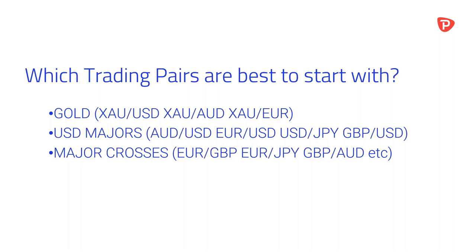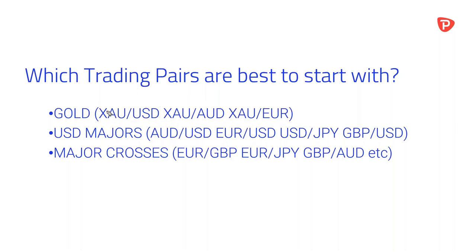There are many trading pairs to consider. The majors like AUD/USD, EUR/USD, and USD/JPY are always popular starting points. But during crisis periods, gold has proven to have extreme volatility and therefore extreme opportunity. With Pepperstone you can trade multiple gold pairs — gold/USD, gold/AUD, gold/EUR, gold/CHF, and gold/GBP — and they all set up differently, giving scalpers, day traders, and swing traders different opportunities. Major crosses like EUR/GBP, EUR/JPY, and GBP/AUD also can't be ignored.